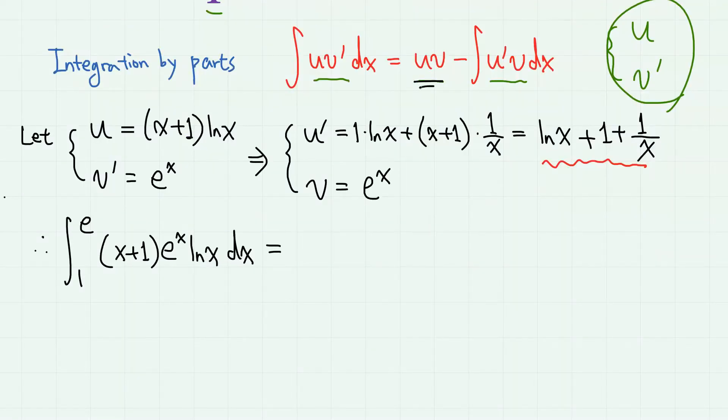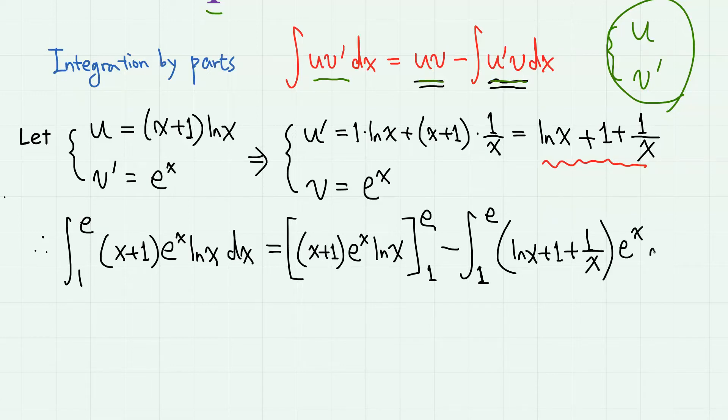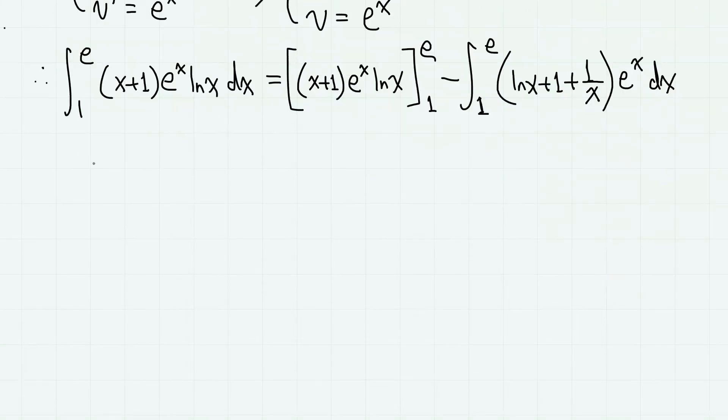So we have, first we need the uv part, so we have (x+1)e^x ln(x), and we have 1 here and e here, minus the integral from 1 to e of the u'v part, which is (ln(x) + 1 + 1/x) times e^x dx.